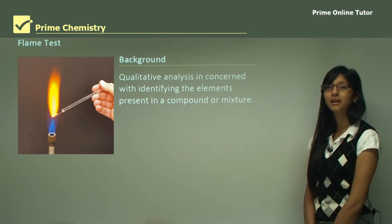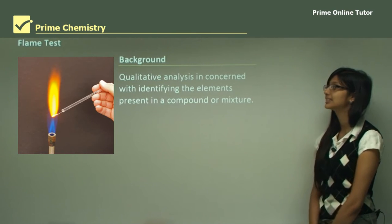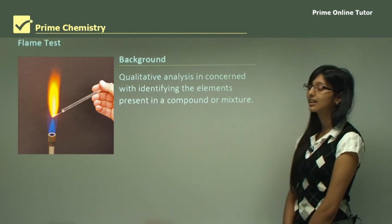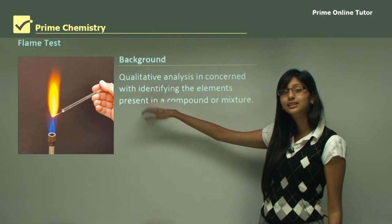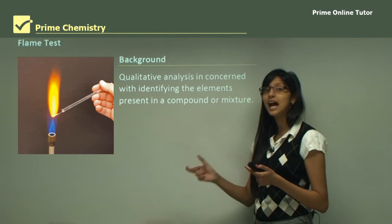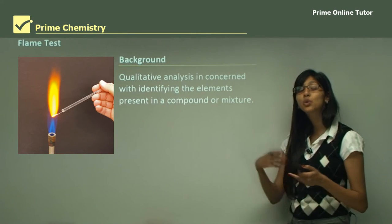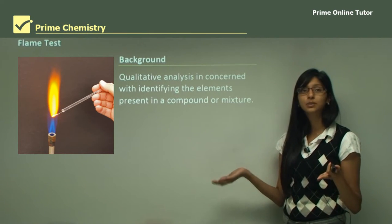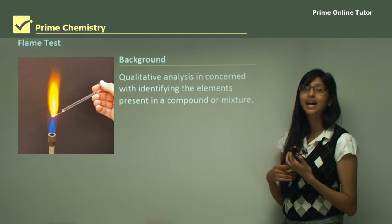Let's look at some background information to understand why this is a useful test to identify cations. Qualitative analysis is concerned with identifying the elements present in a compound or mixture. Note that it's qualitative analysis, not quantitative analysis — quantitative analysis measures how much of each ion is present, whereas qualitative analysis identifies which cations are present, not how much of each.